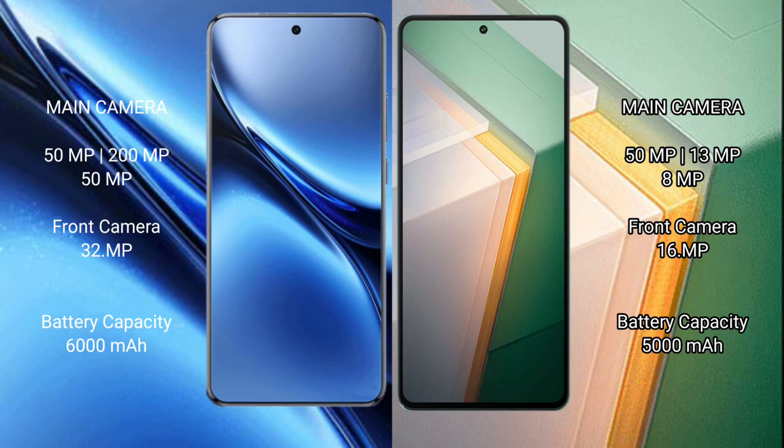Vivo X200 Pro rear triple camera setup: 50MP, 30MP, plus 25MP, with a 32MP front camera. Vivo iQOO 11 rear triple camera setup: 50MP, 13MP, and 8MP, with a 16MP front camera. Vivo X200 Pro has a 6000mAh battery with 90W fast charging support. Vivo iQOO 11 has a 5000mAh battery with 120W fast charging support.